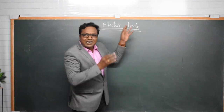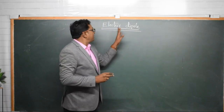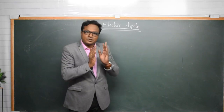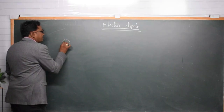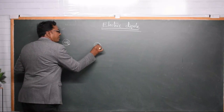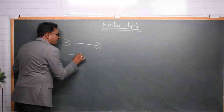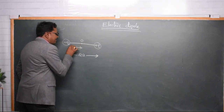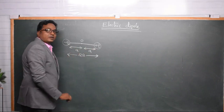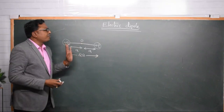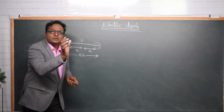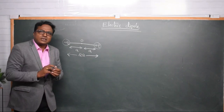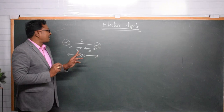The word 'dipole' means two poles. In an electric dipole we consider two poles that are equal and opposite. We take two charges: one is minus q and another is plus q — these are equal and opposite charges separated by a very small distance denoted by 2a. A system consisting of two equal and opposite charges separated by a very small distance is called an electric dipole.